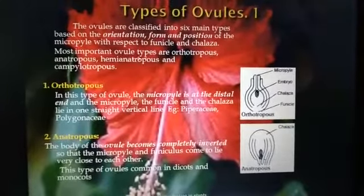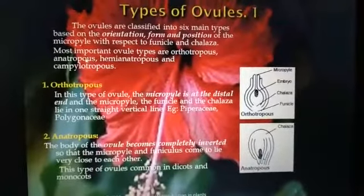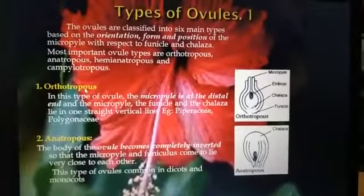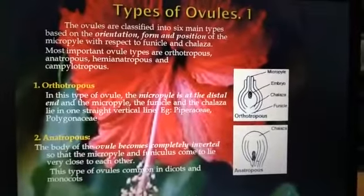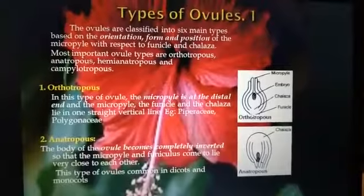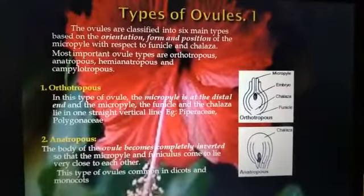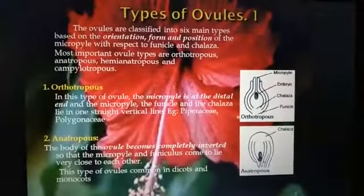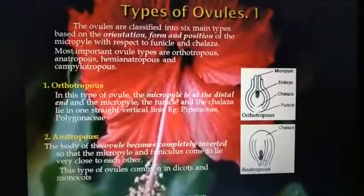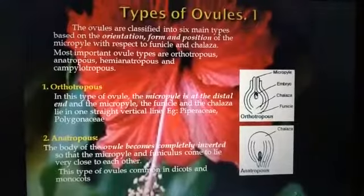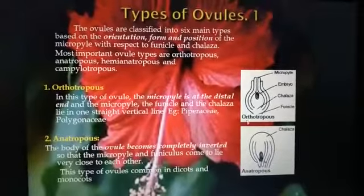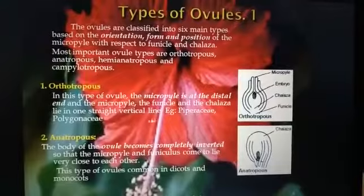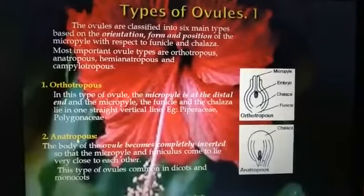Based on these features, ovules are divided into six main types: orthotropous, anatropous, hemi-anatropous, and campylotropous ovules, among others. In the orthotropous ovule, the micropyle, chalaza, and funicle are all located in a straight vertical line. This type of orthotropous ovule occurs in the Piperaceae and Polygonaceae families.